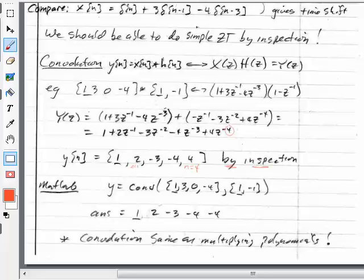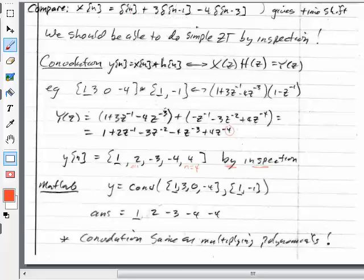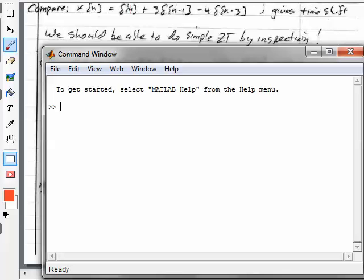Let me see if I can pop up MATLAB. And I'm going to type in Y equals CONV, and the two vectors are 1, 3, 0, minus 4. And the second one is 1, minus 1. And you see that it gives the answer, which is 1, 2, minus 3, minus 4, minus 4. So directly we can get the answer using MATLAB.